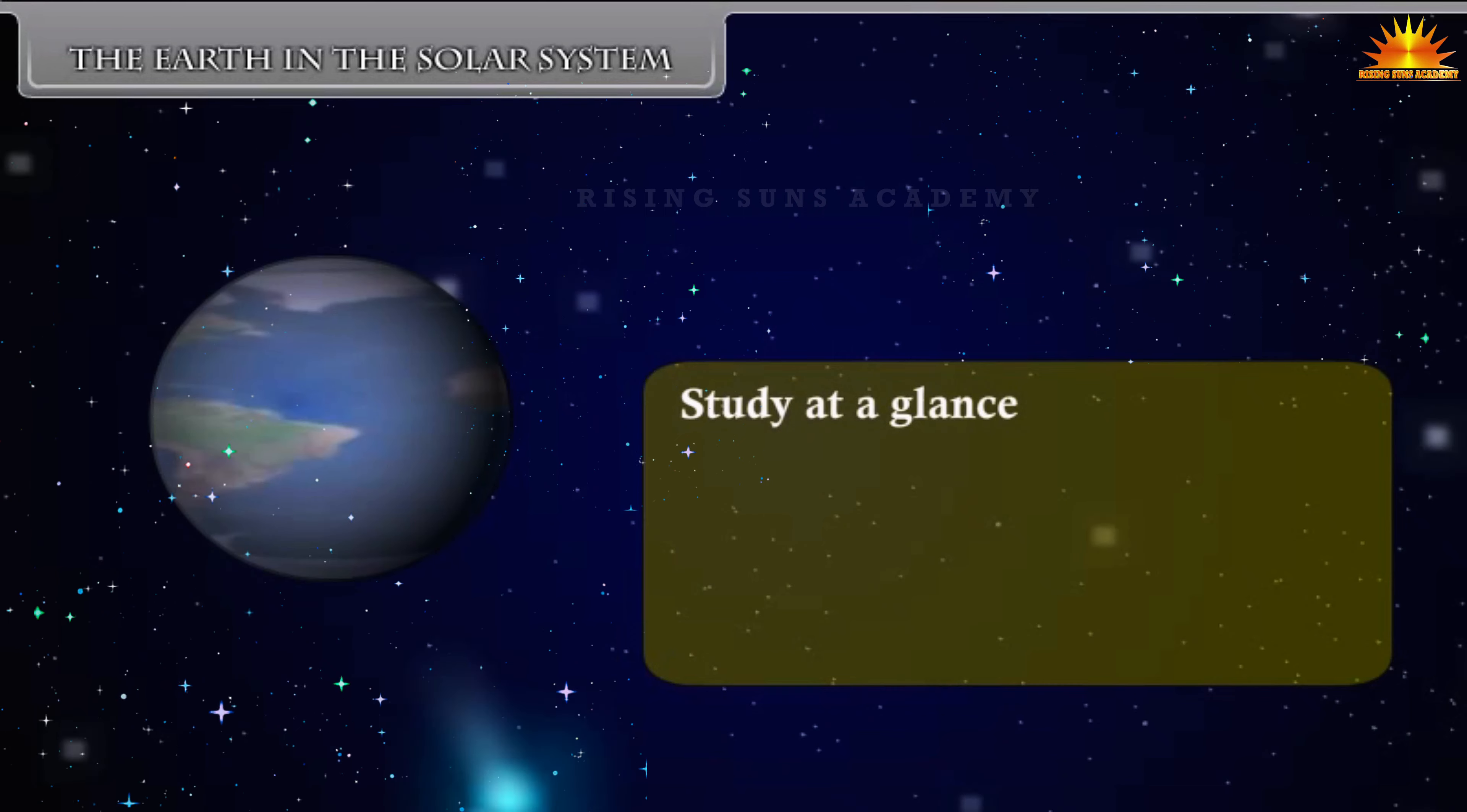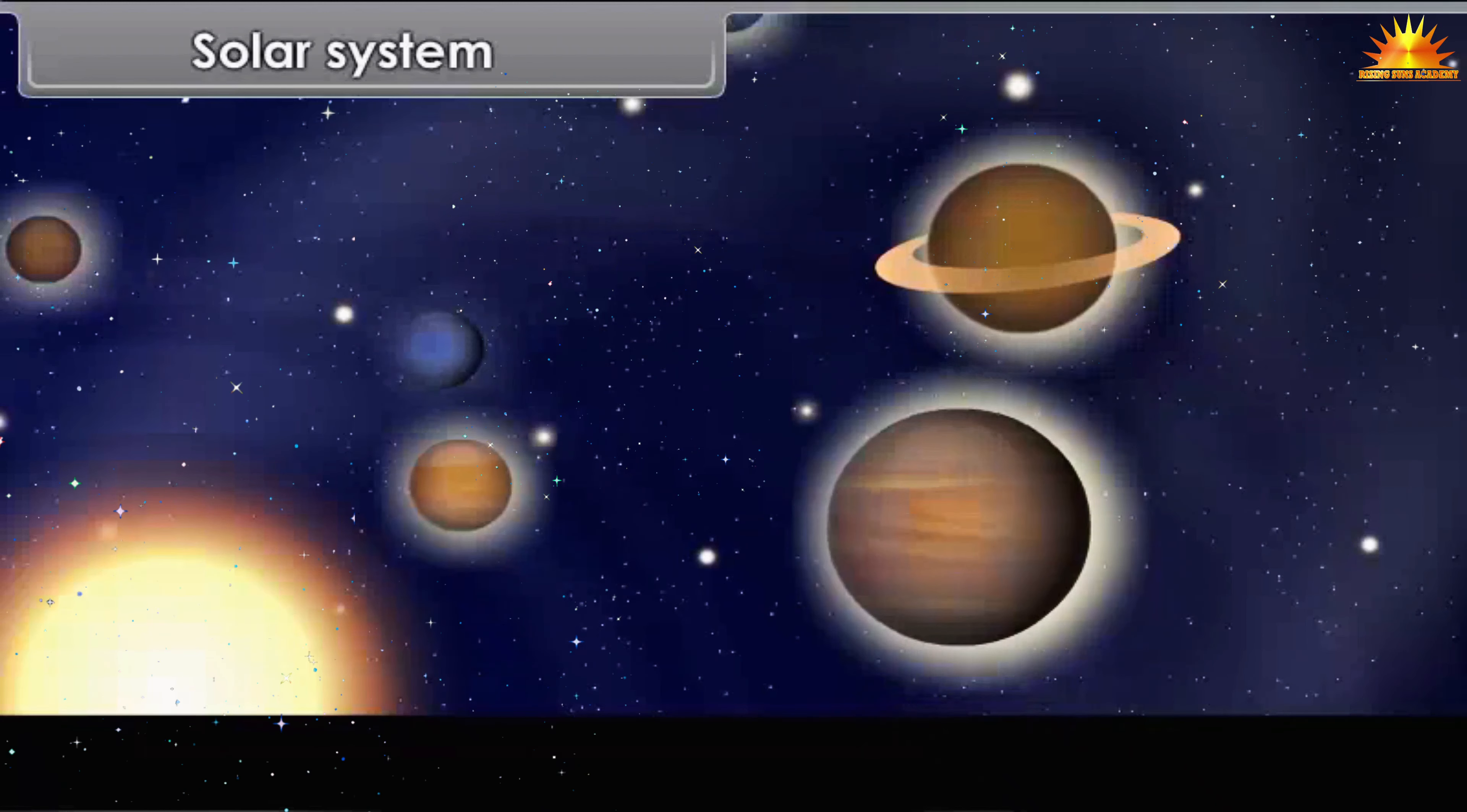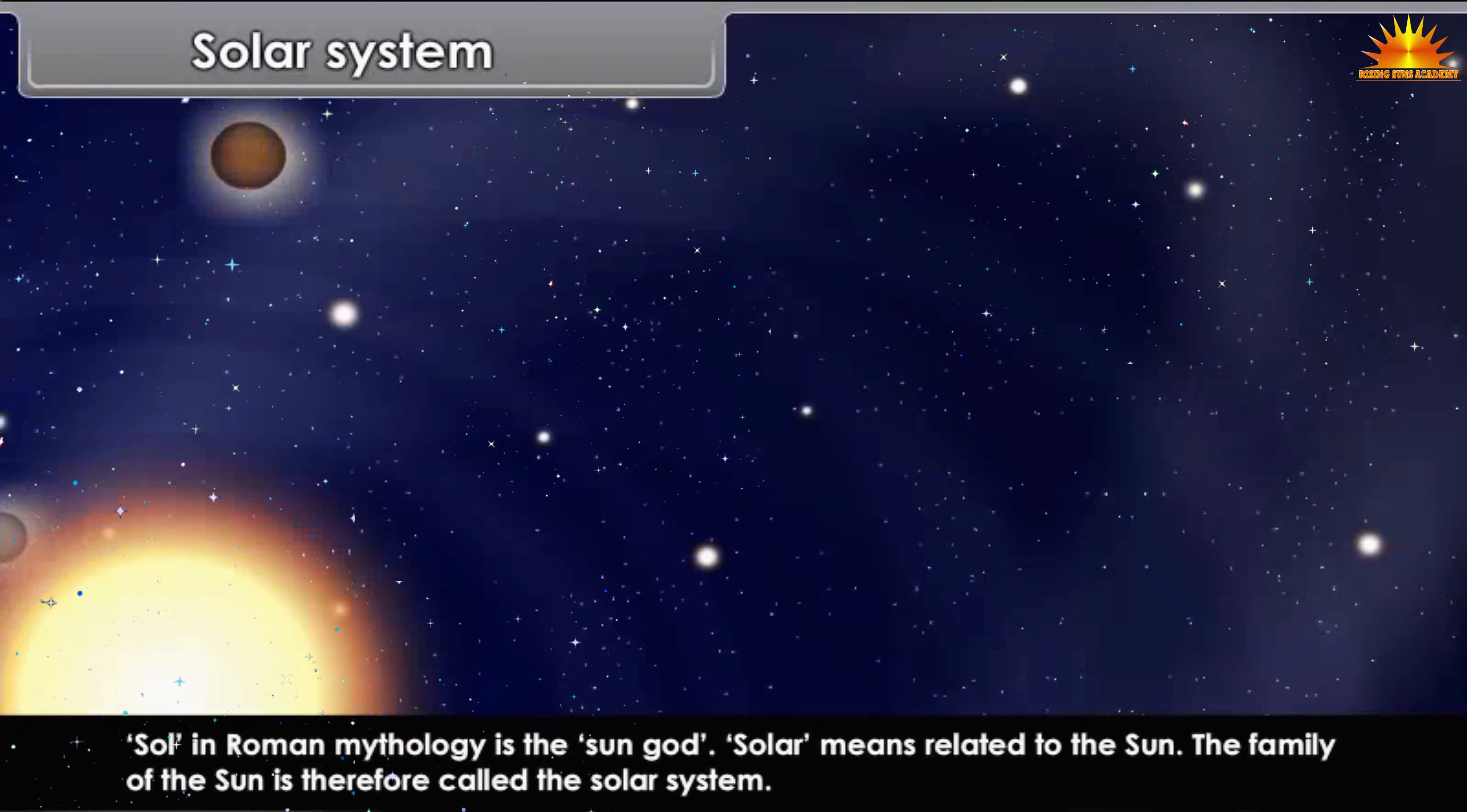Study at a glance: Solar System, Our planet Earth, Moon, Earth's only companion. Sol in Roman mythology is the sun god. Solar means related to the sun. The family of the sun is therefore called the solar system.